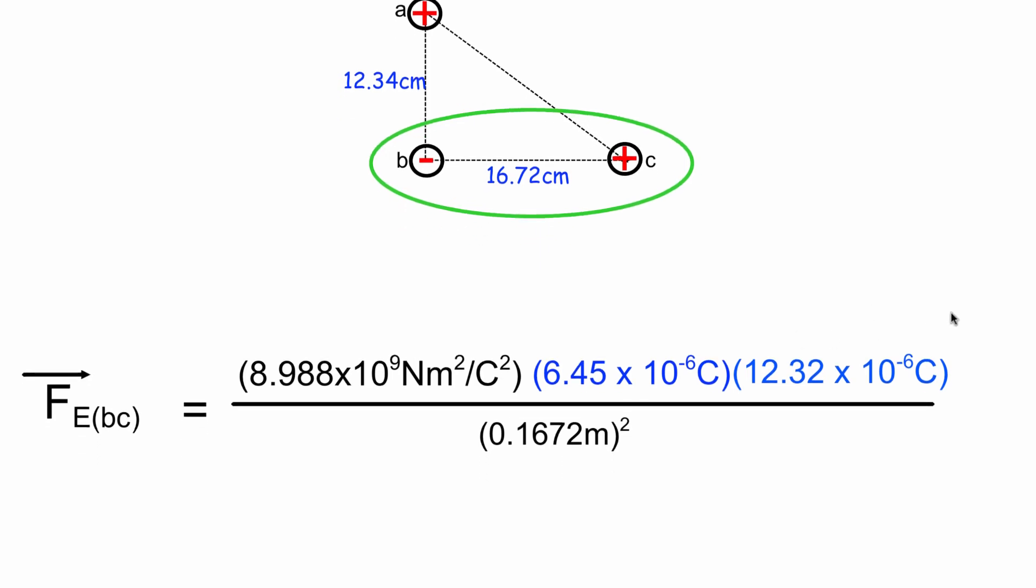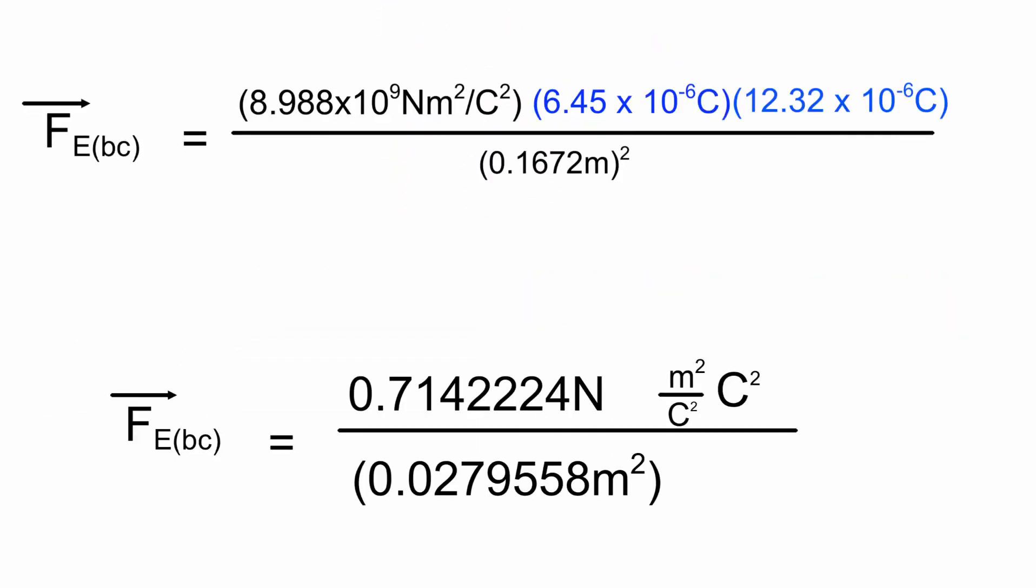Multiply out the top, square the bottom. Here's what we get. With all the other examples, the coulombs cancel out, the meters cancel out. Now we're left with 0.7142224 newtons divided by 0.0729558.